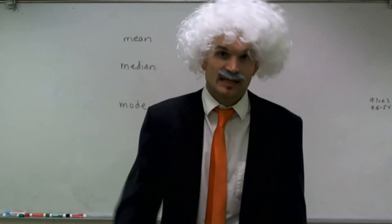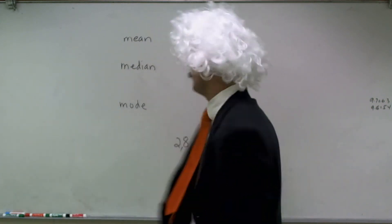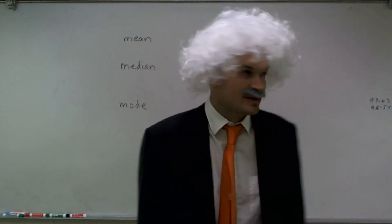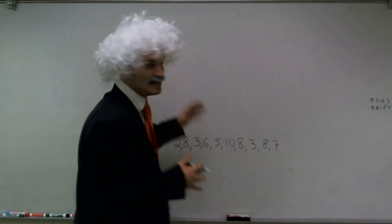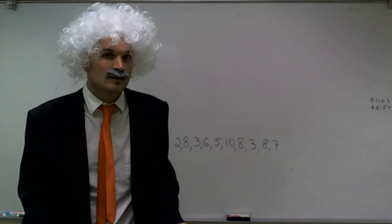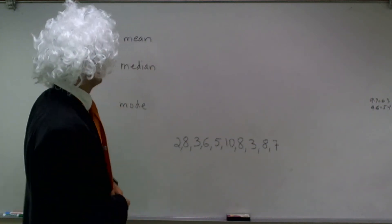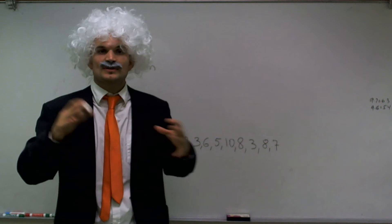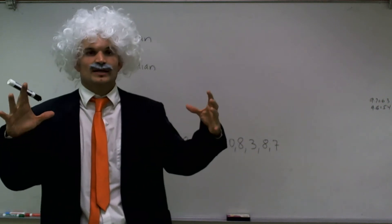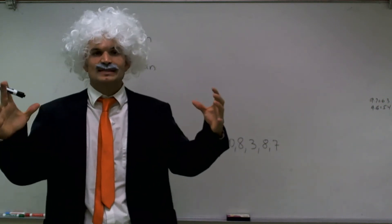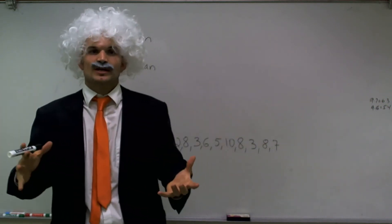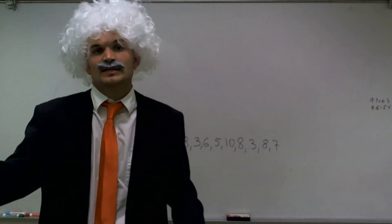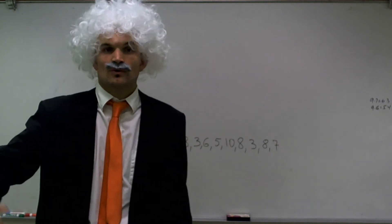Now, why do we use mean, median, and mode? Well, to find mean, median, and mode — say that five times fast — we do that so we can find what we call the central tendencies. That's kind of like when we take a group of information, how we can find the central value.